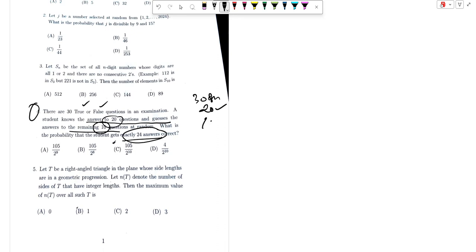20 questions correct and guesses 10. Since the student knows the answer to 20 questions with certainty, of the remaining 10 questions, he has to get only 4 of them correct. So from the 10 guesses, 4 need to be correct and 6 incorrect.